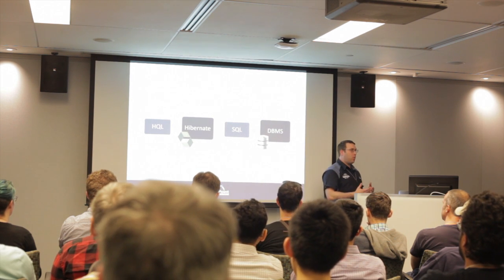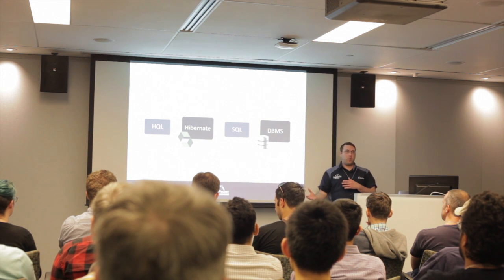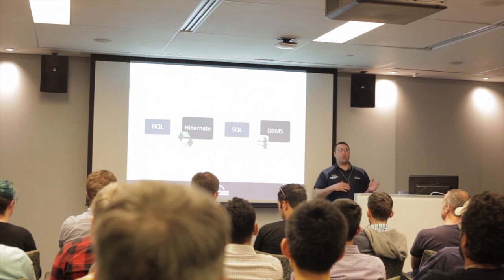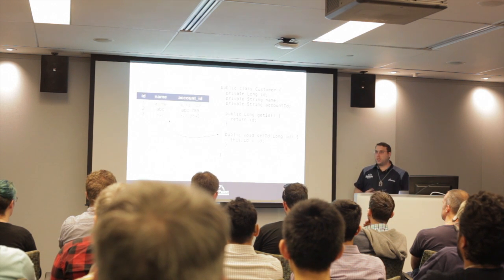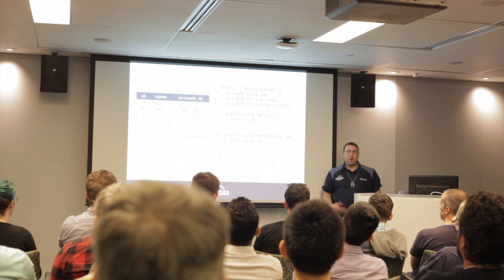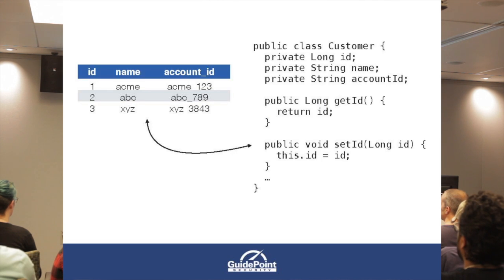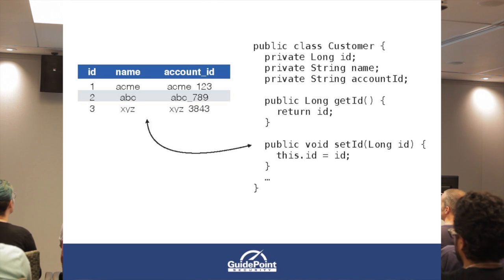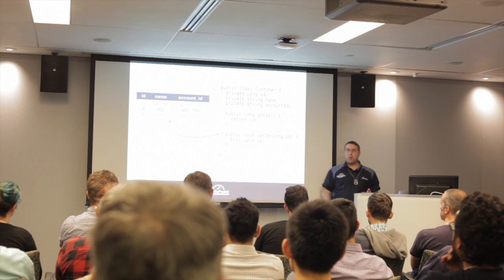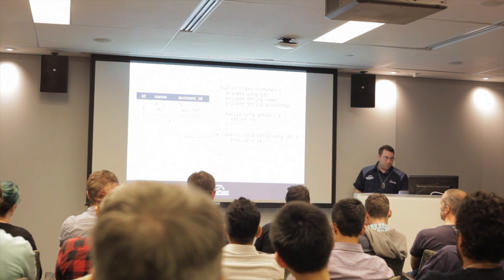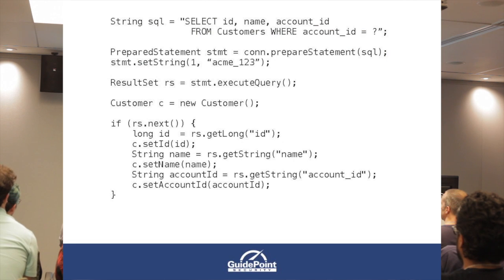If you're writing a web app in Java, you're probably using Hibernate. Here's an example: on the left, a table with some rows of data; on the right, our customer class — a plain old Java object. This is how we might represent database data in the Java world.